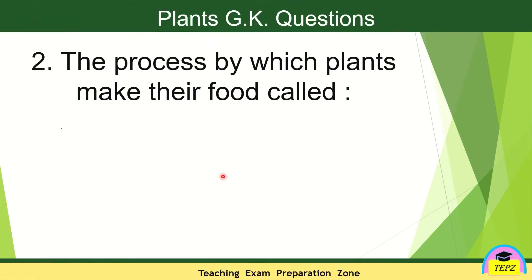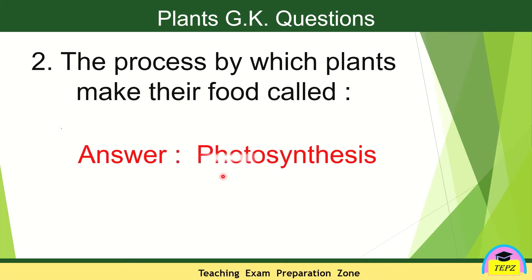Next one: the process by which plants make their food is called? The answer is photosynthesis. Plants make their food themselves — they prepare their own food by using sunlight, water, carbon dioxide, and also minerals from the soil. This process is called photosynthesis.